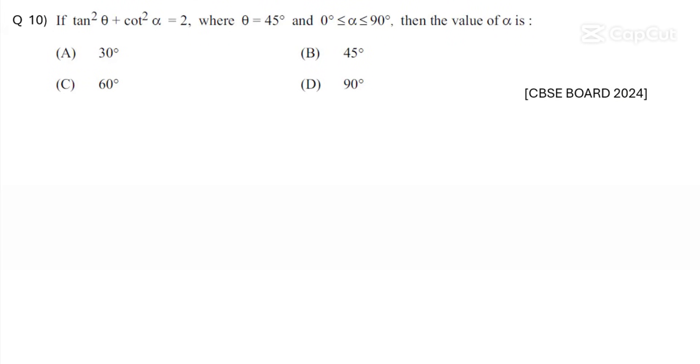Hello dears, welcome to Math Shots Family. This is Question 10 of the MCQ series. If tan²θ + cot²α = 2, where θ = 45° and 0° ≤ α ≤ 90°, then find the value of α.